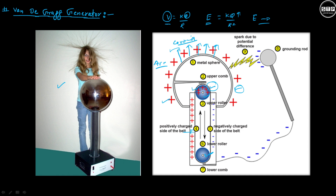In the Van de Graaff generator, if you keep increasing the potential on the metallic sphere, this corona discharge will take place. This is the complete setup of the Van de Graaff generator. Thank you.